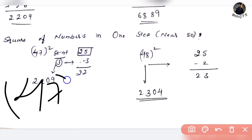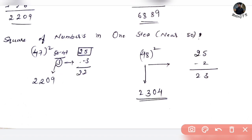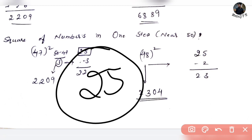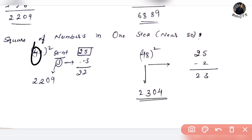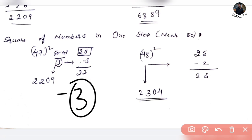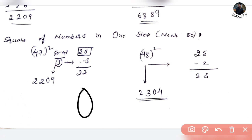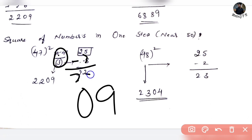Let's say 47 squared. The nearest round number is approximately 50. So let's use 25 as our base reference. 47 is 3 less than 50. So it's (25 minus 3) for the hundreds part, giving 22, and then 3 squared is 9. If you get 10 and above in the units part, it carries over. Since 47 is 3 less than 50, we get 22, and then 09, so 2,209 is your answer.